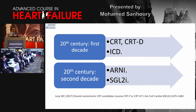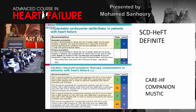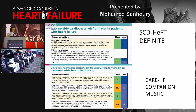Guidelines recommend ICD for secondary prevention of sudden cardiac death in patients with hemodynamically significant ventricular arrhythmia or resuscitated cardiac arrest. For primary prevention, ICD may be indicated if the patient has NYHA class 2–3 symptoms with ejection fraction remaining less than 35% despite three months of optimal medical treatment, whether the etiology is ischemic or dilated cardiomyopathy. For CRT, guidelines recommend referral if the patient has resistant heart failure symptoms despite optimal medical treatment for more than three months, with QRS duration more than 130 ms, preferably in left bundle branch block morphology.